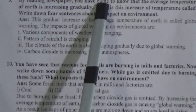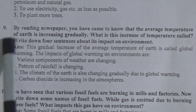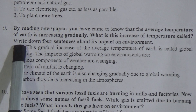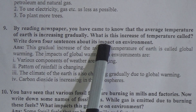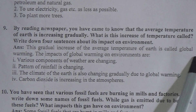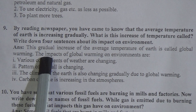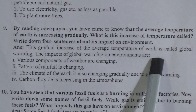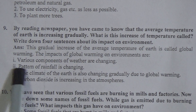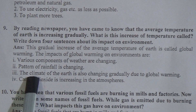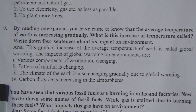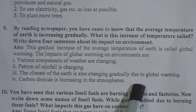By reading a newspaper you have come to know that the average temperature of Earth is increasing gradually. What is this increase of temperature called? Write down four sentences about its impact on the environment. The answer is: this gradual increase of average temperature of Earth is called global warming. The impacts of global warming on the environment are: first, various components of weather are changing; second, the pattern of rainfall is changing; third, the climate of the Earth is also changing gradually; fourth, carbon dioxide is increasing in the atmosphere.